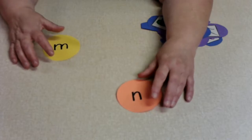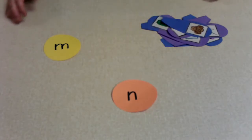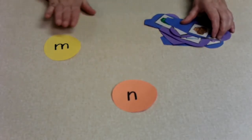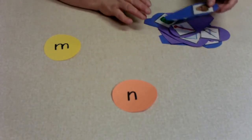So map, nap. Do you hear the difference between those beginning sounds? We have two little circles here. One has the M sound, the other has the N sound.